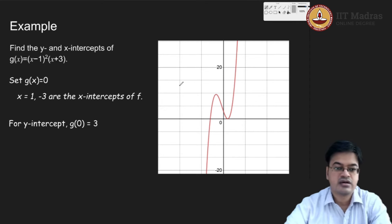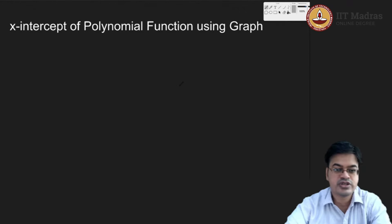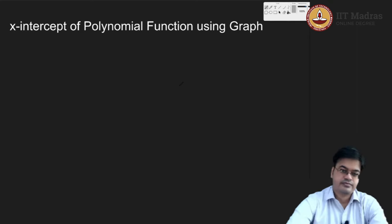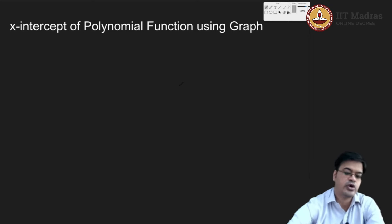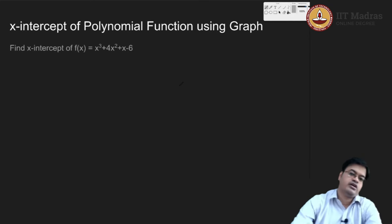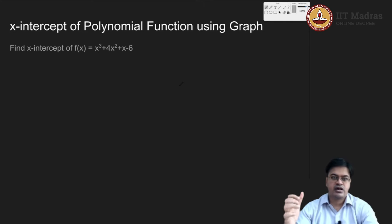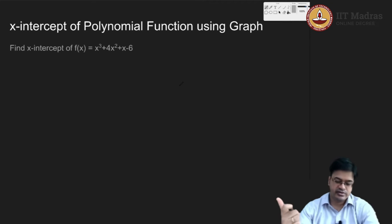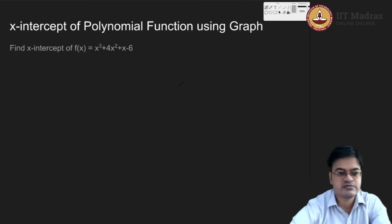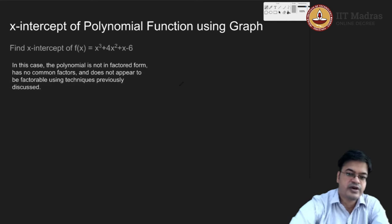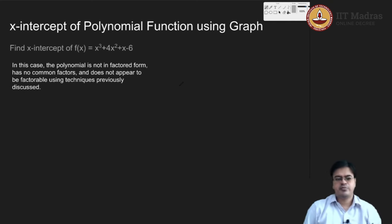Let us now look at identifying the x-intercepts using a graph. You have been given a polynomial function, you have used technology to identify the graph, but you are still not convinced and want to try it by hand. How will you do it? If I want to find the x-intercept, the given polynomial is a cubic polynomial.